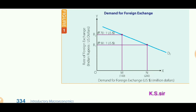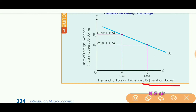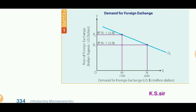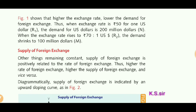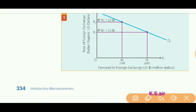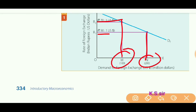On the X-axis we have demand for foreign exchange — US dollars in our example — and on the Y-axis we have the rate of foreign exchange. The figure shows that higher the exchange rate, lower the demand for foreign exchange. For instance, at price R1 (say 50 rupees), demand was 200 million dollars; when price rose to R2 (say 70 rupees), demand fell to 100 million dollars. Please practice drawing this diagram in your notebook.